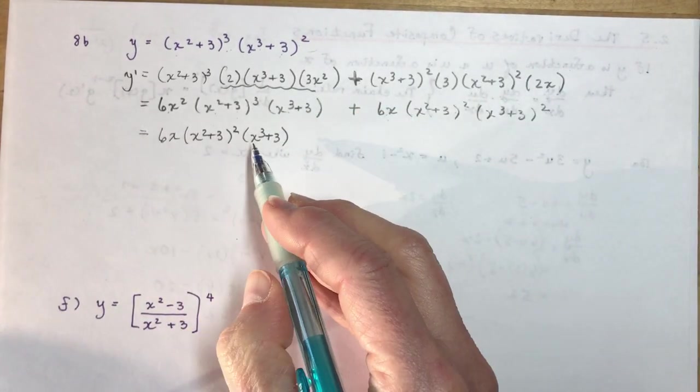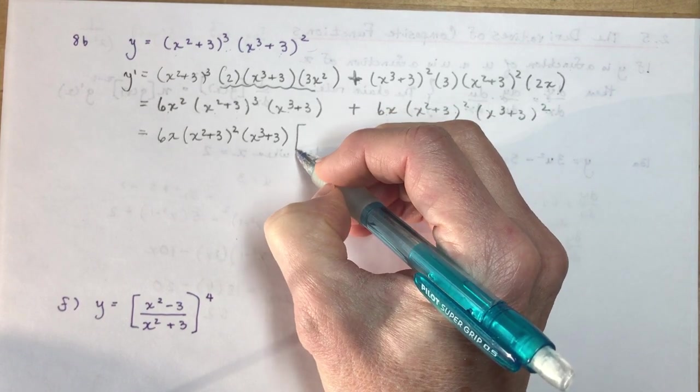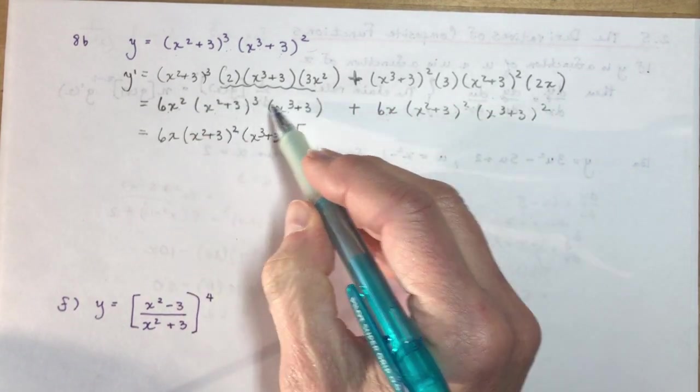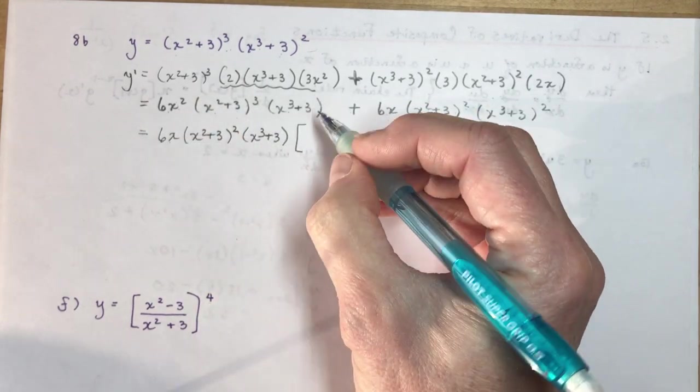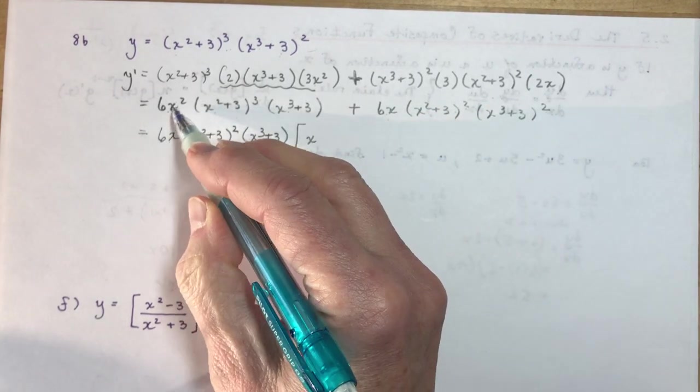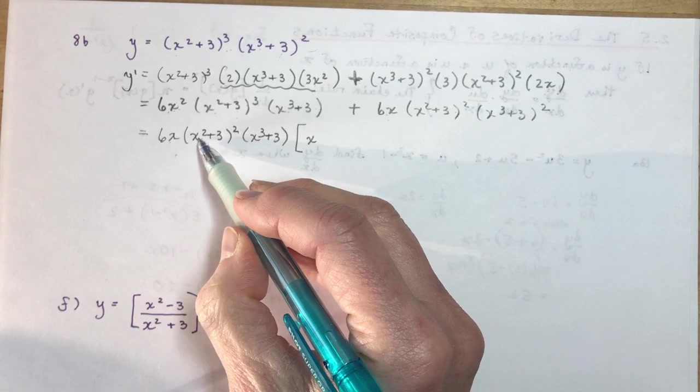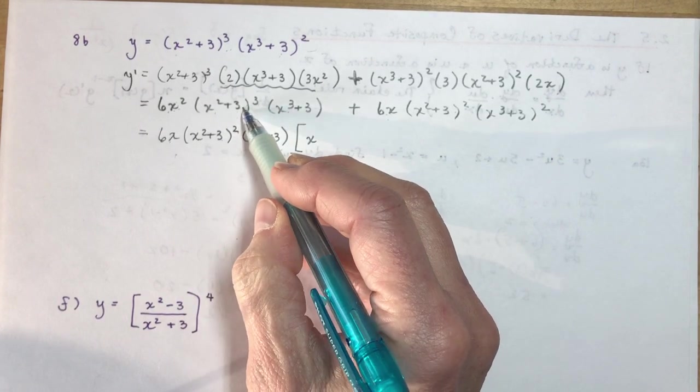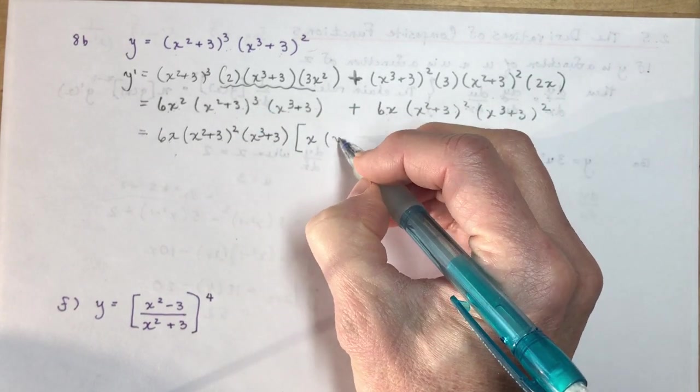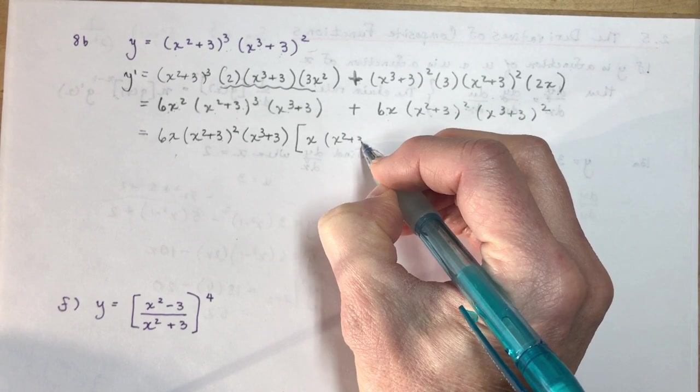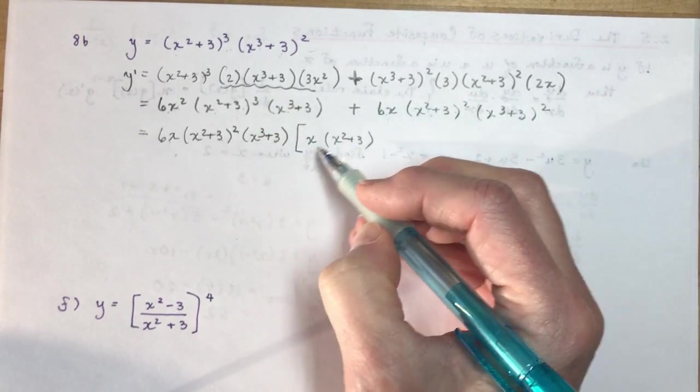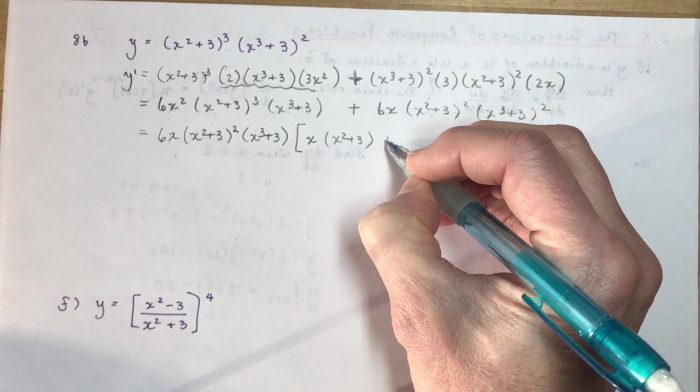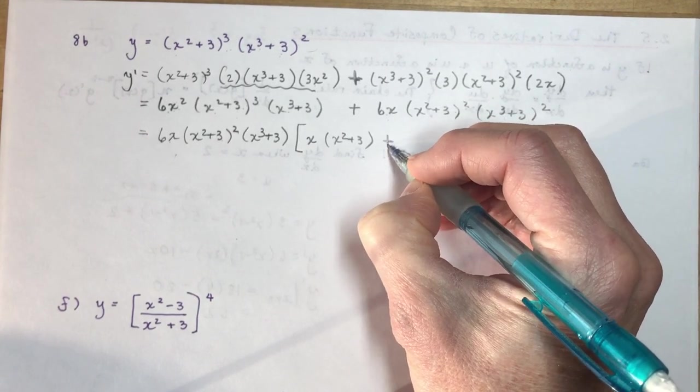So let's put that down first. Okay, I have an (x² + 3)³ and an (x² + 3)². So the most I can take from both is an (x² + 3)². Now I look at the (x³ + 3). I have one of them here and I have two of them here. So I can take one of them from both. Okay, so those are your common factors.